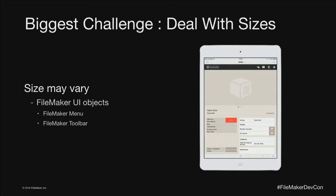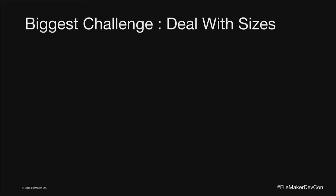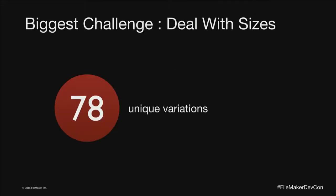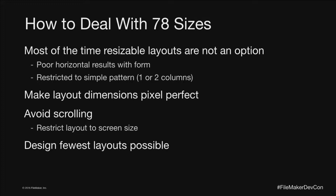At the end, you add FileMaker objects - the FileMaker menu and the FileMaker toolbar, which you can activate or not. Every object can change the sizes. At the end you have 78 different variations. It's impossible to design a solution for all 78 variations, but we have solutions.